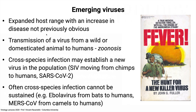We have a term embedded in the idea of emerging viruses: zoonosis. A zoonosis is the transmission of a virus from a wild or domesticated animal to humans. SARS-CoV-2 was a zoonosis at one time — it came from a non-human animal to a human — but now it's no longer a zoonotic virus. It is a human virus.